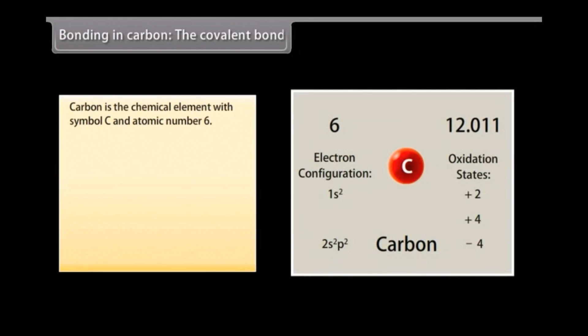Bonding in carbon. The covalent bond. Carbon is the chemical element with symbol C and atomic number 6. As a member of group 14 on the periodic table, it is non-metallic with four electrons available to form covalent chemical bonds.